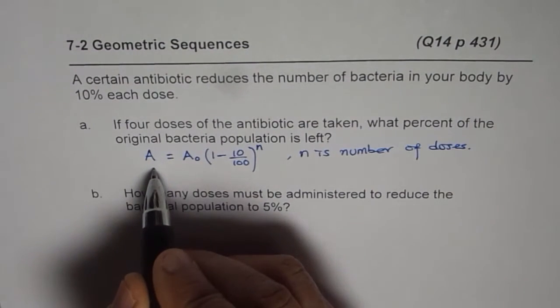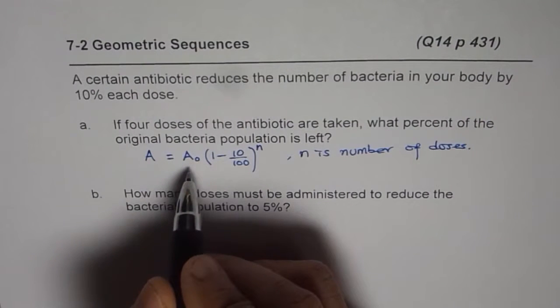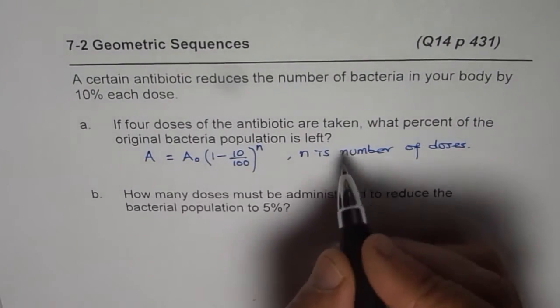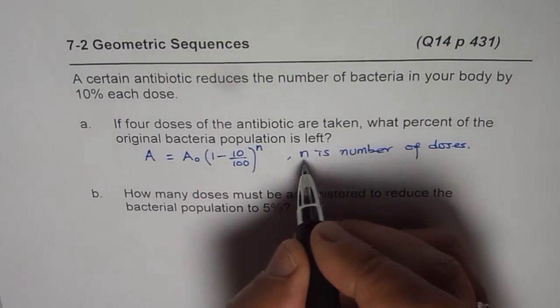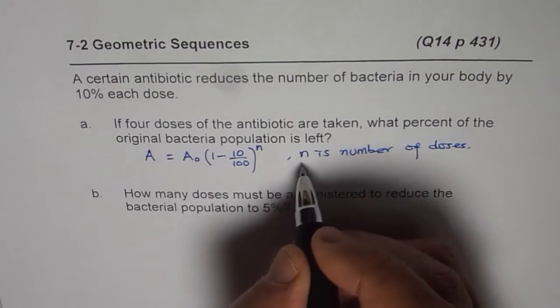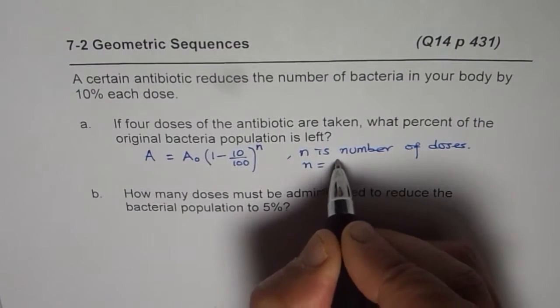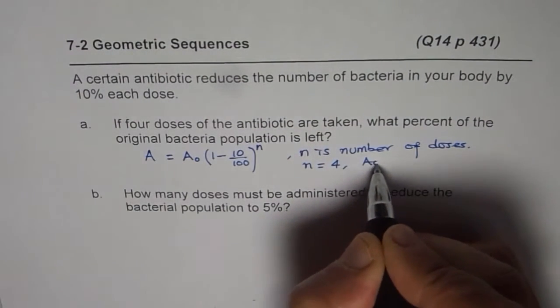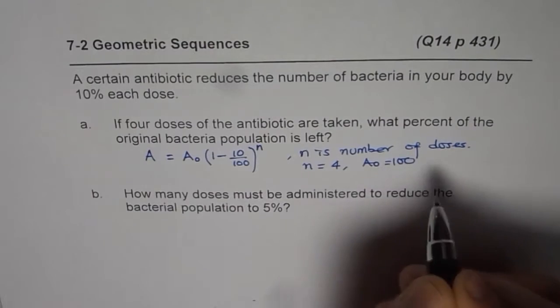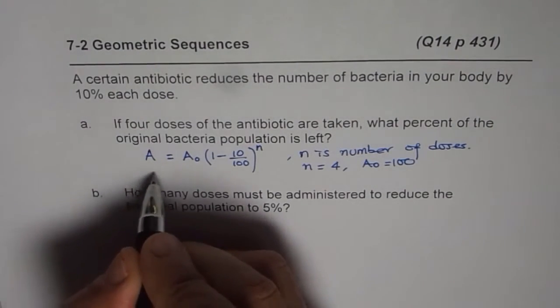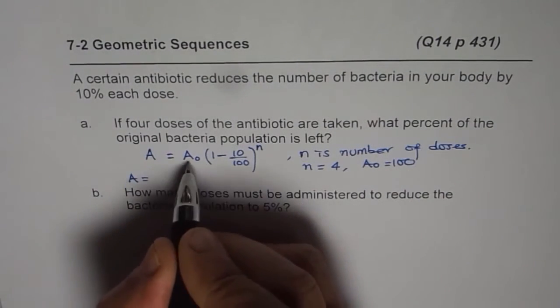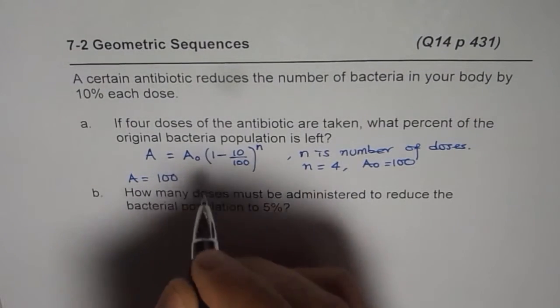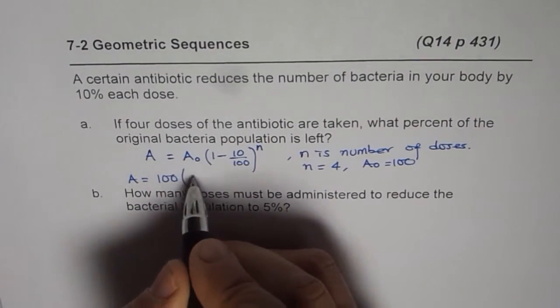So what we will do is out of 100 how much is left, so that gives me direct value of percent. To find percent left, we will, since we have taken four doses, say let n equals 4 and A₀ be 100. So A will now be equal to 100 times (1 minus 10 percent) which is 0.90 to the power of 4.